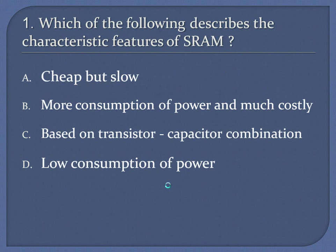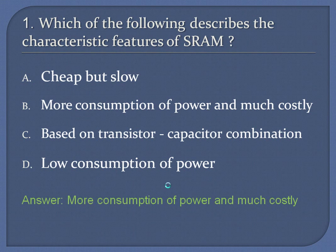Question 1: Which of the following describes the characteristic features of SRAM? A. Cheap but slow. B. More consumption of power and much costly. C. Based on transistor-capacitor combination. D. Low consumption of power. Answer: More consumption of power and much costly.